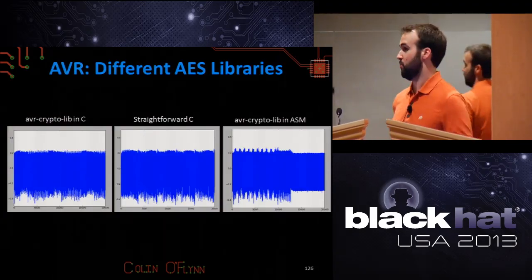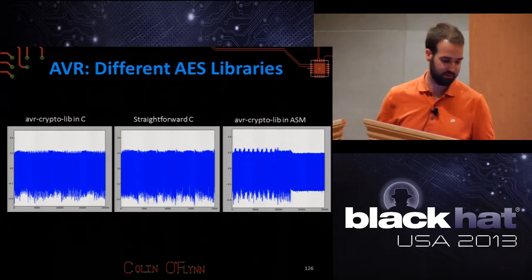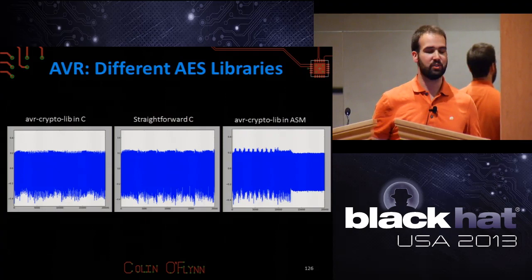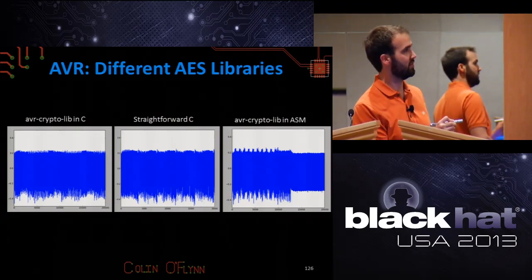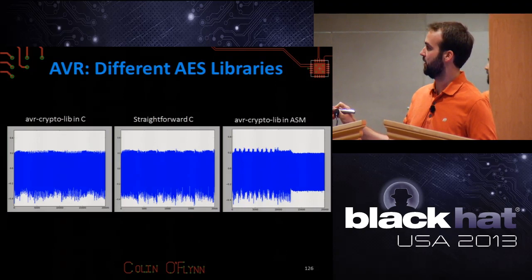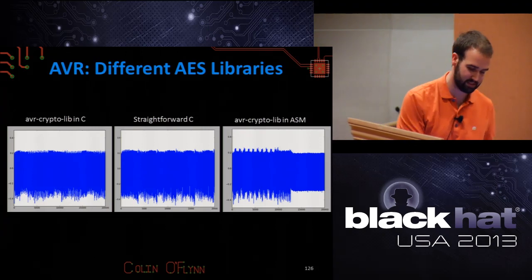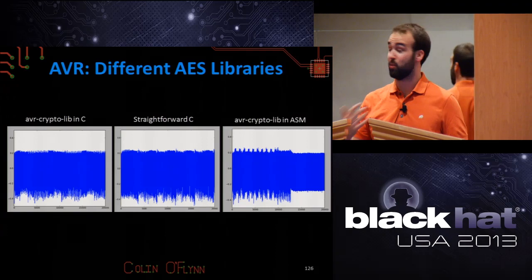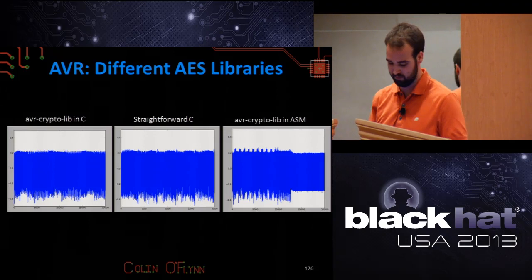Another aspect is fingerprinting — figuring out what library is running on a device. I've loaded three different AES implementations on an AVR microcontroller: assembly AES and C AES from AVR CryptoLib, plus a straightforward C AES implementation like what you'd write from the Wikipedia algorithm description. They all look slightly different, but they all break using the exact same attacks.